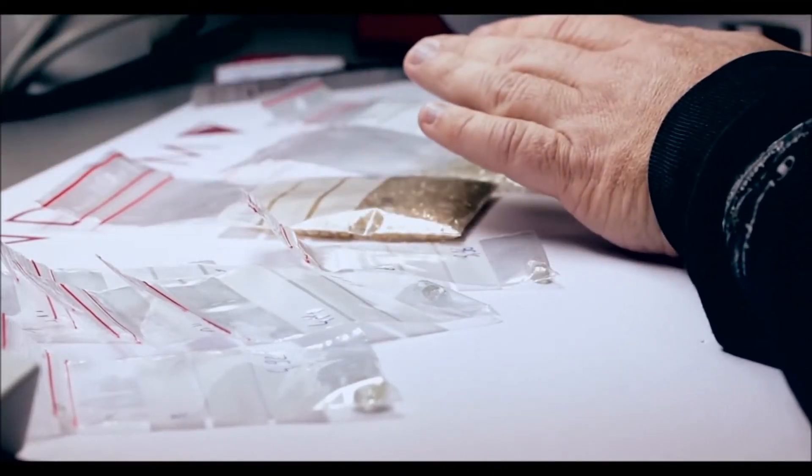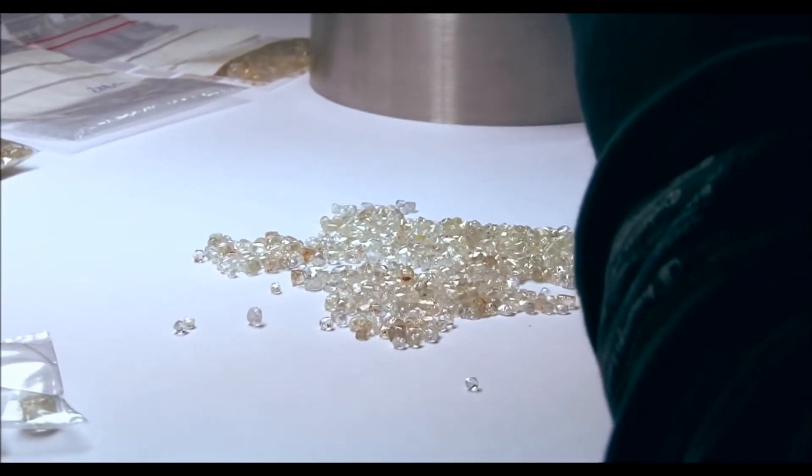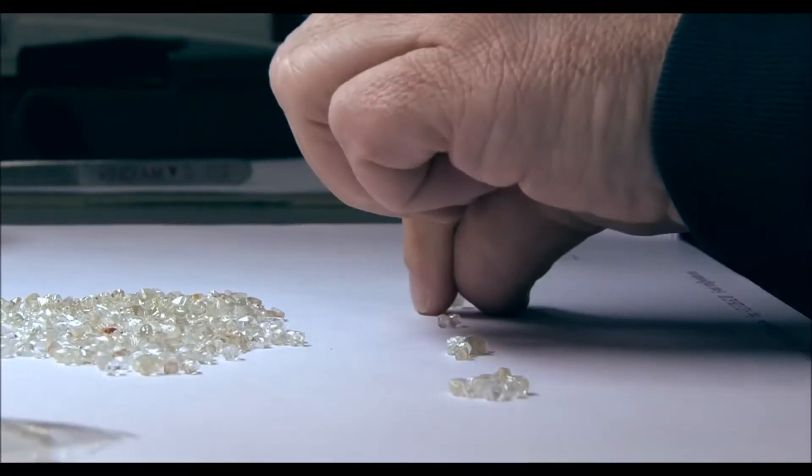The stones are sorted according to the size, then the shape, clarity, and color of the stones. These are the main criteria when the diamonds are being sorted.